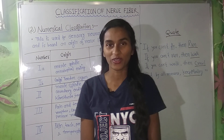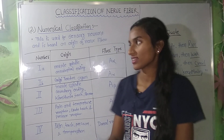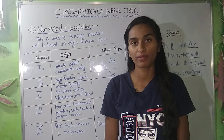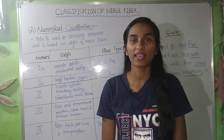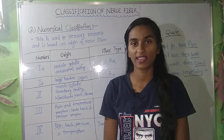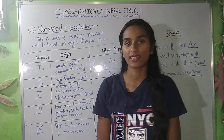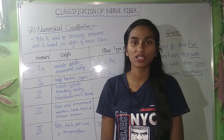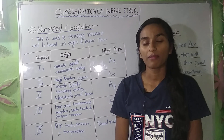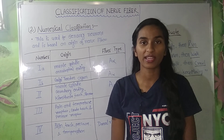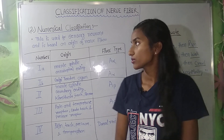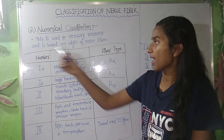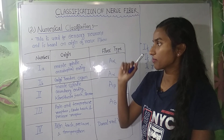Hello everyone. In this video I am going to discuss the classification of nerve fiber. Before this, I made a video on classification of nerve fiber which I discussed earlier. In this video I will discuss numerical classification, which is based on the origin of nerve fiber. This is mainly used to classify sensory nerve fibers. Numerical classification is used for sensory neurons and is based on the origin of nerve fiber.